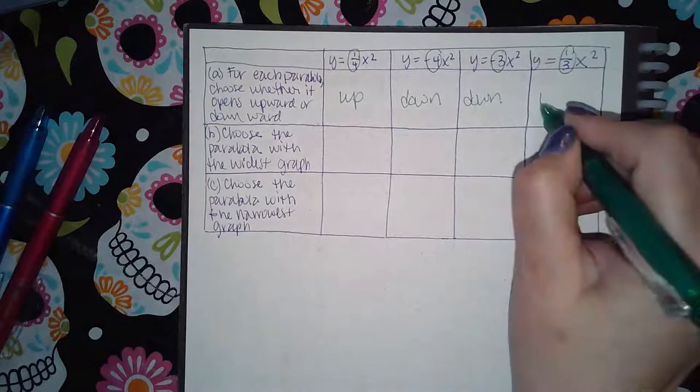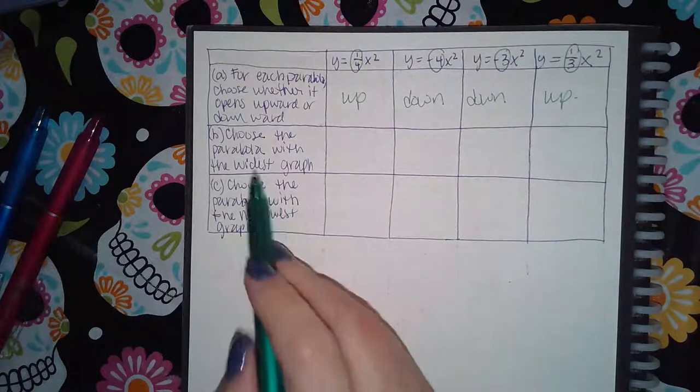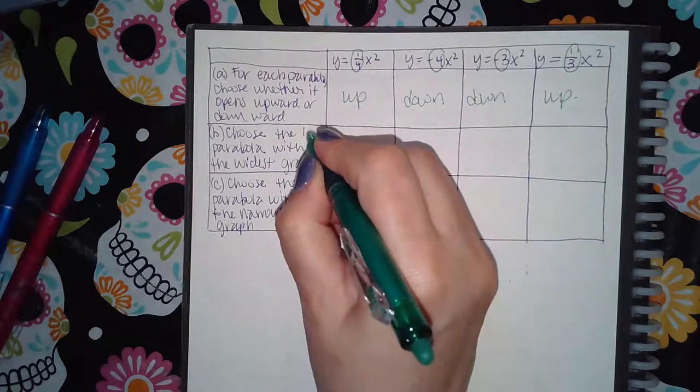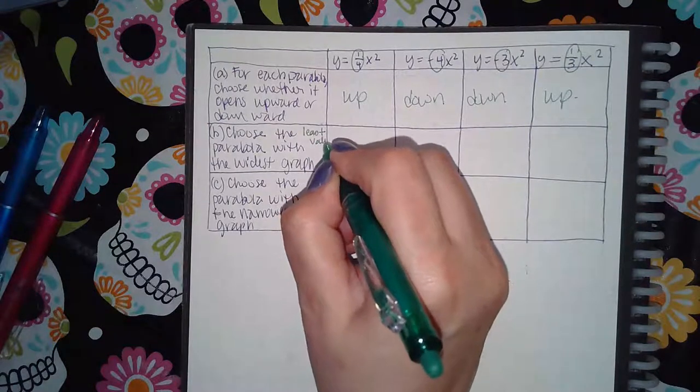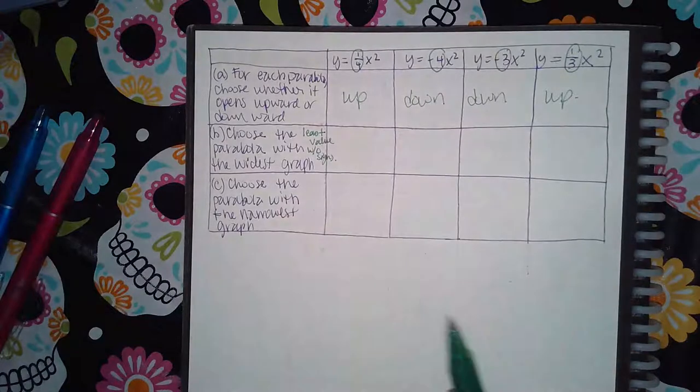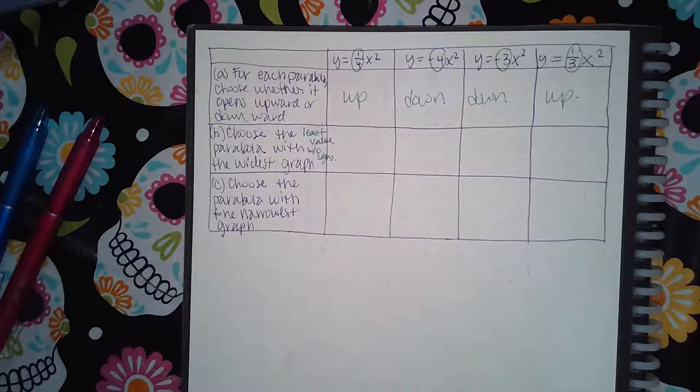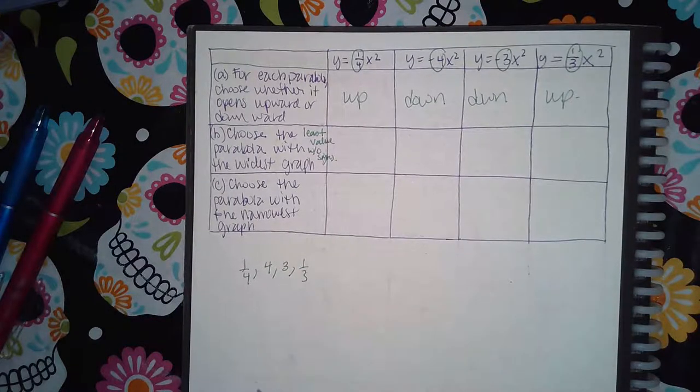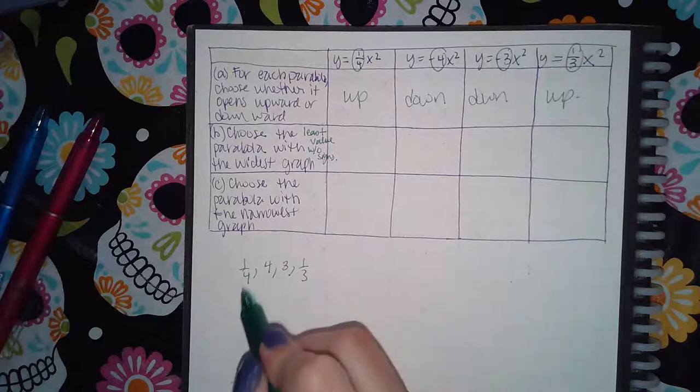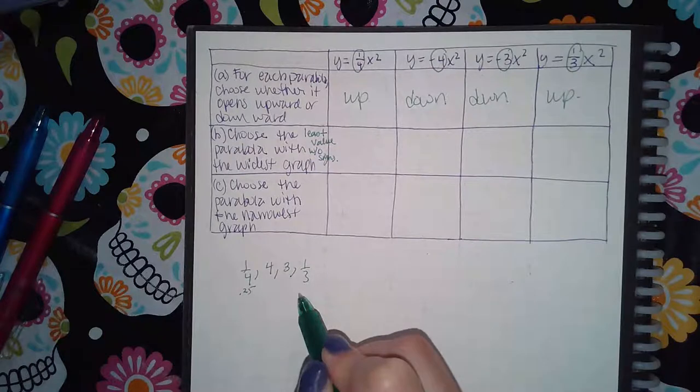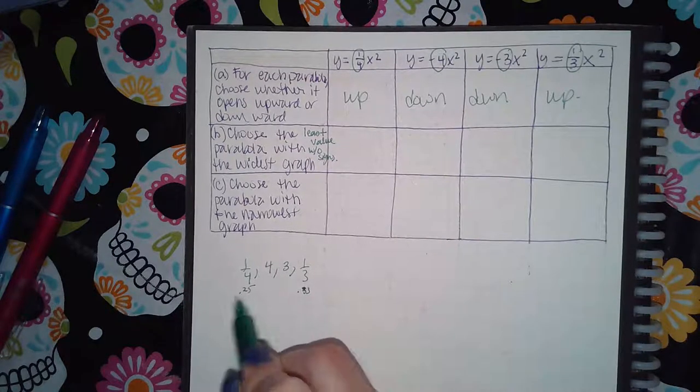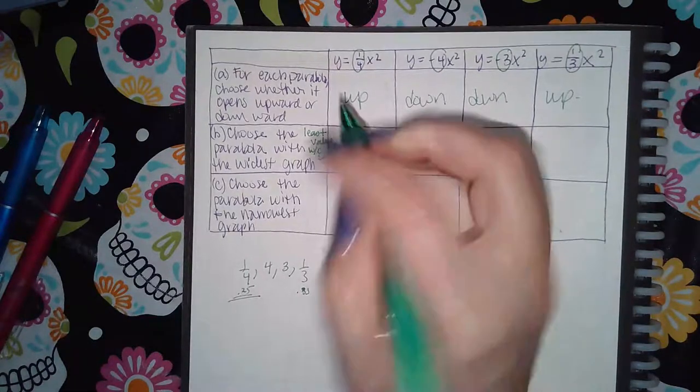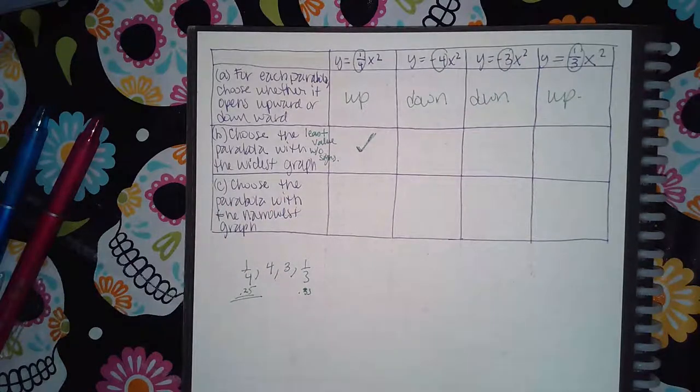It says choose the graph, the parabola with the widest graph. This is going to be the one with the least value without the signs. So it's the smallest coefficient but without the signs. You're basically comparing the one-fourth, the four, the three, and the one-third. Which of these is the smallest? We know that one-fourth is 0.25 and we know that one-third is 0.33. So the least is actually one-fourth. So it doesn't matter whether the sign is positive or negative, the widest graph is going to have the smallest coefficient.